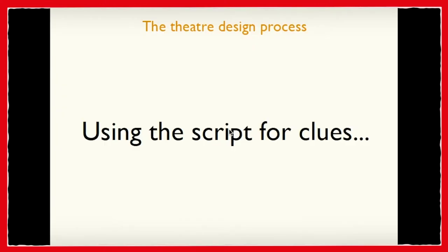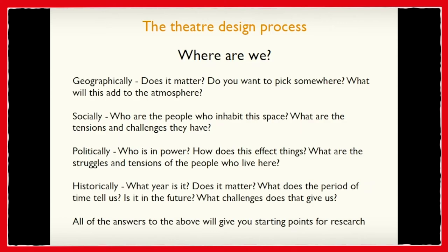I'm going to talk about how I use the script for clues. I start by thinking: where are we? Geographically, does this matter? If you're designing a Shakespeare and reimagining it as relevant to an audience today, where in the world is going to resonate? Socially — who are the people inhabiting the spaces we're creating on stage? What tensions and challenges do they have, what is going on in their lives? And politically — who's in power, how is this affecting things, and what are the struggles and tensions of the people on stage?